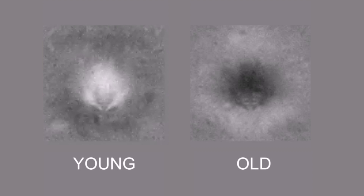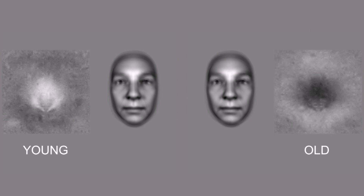Here, for one participant, are the young and old information images. As you can see, our methods work because each image modifies the apparent age of the underlying face. Each is the sum of the Gabor noise associated with the young and old age judgments for this participant.